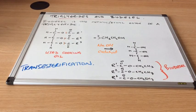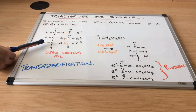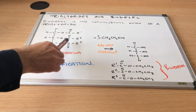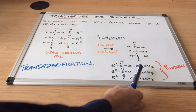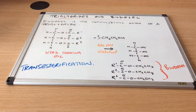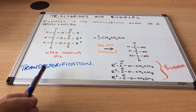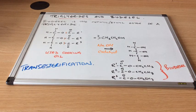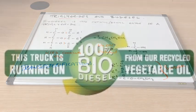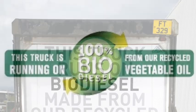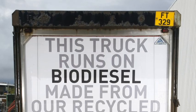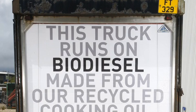The process is known as transesterification. So if we think about why that's the case, we start out with a triglyceride, which is an ester. You see the ester bonds there. And we turn that into a different ester. In this case, three different esters. So essentially, we're transforming one ester into another ester. And so it's called transesterification. Thank you.